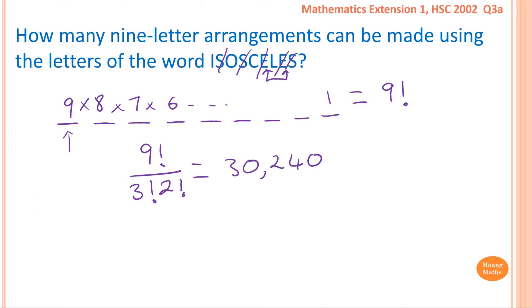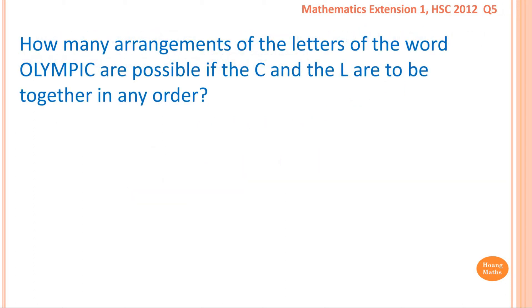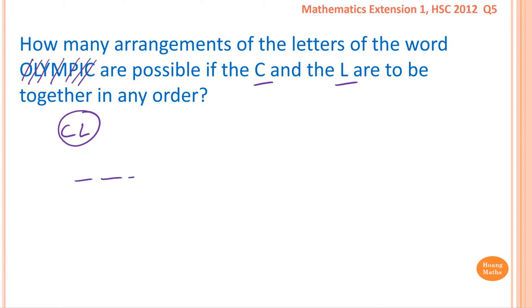How many arrangements of the letters of the word OLYMPIC are possible if the C and the L are to be together in any order? To solve this question, the restriction is key — we do the restriction first. The restriction is C and L must be together, so we treat them as one unit, giving us one, two, three, four, five, six, seven — seven letters altogether.